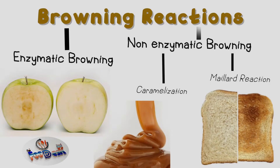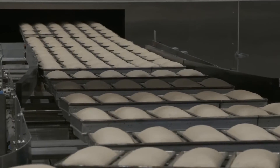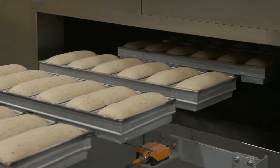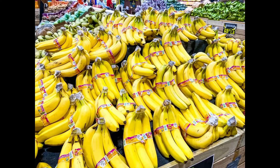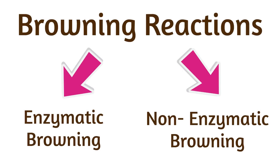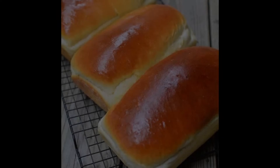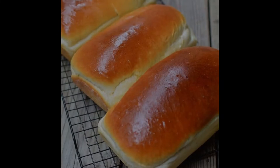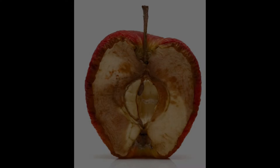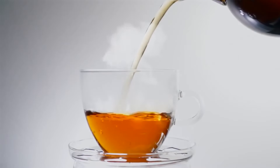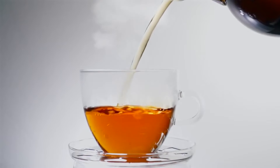Hi friends, today we are going to discuss about browning reactions. Browning is one of the most important reactions taking place during food processing and storage. Both enzymatic and non-enzymatic browning can affect the quality of food in either positive or negative ways depending on the type of food.